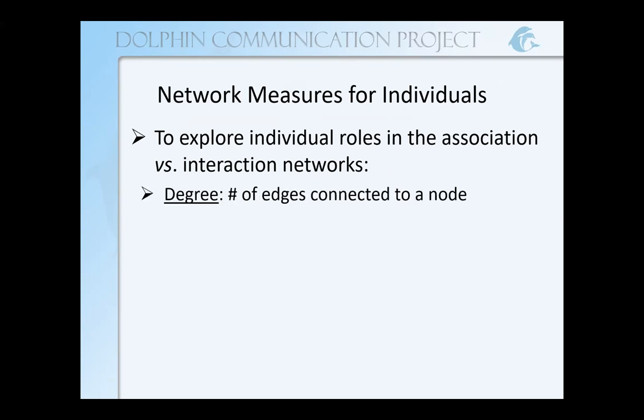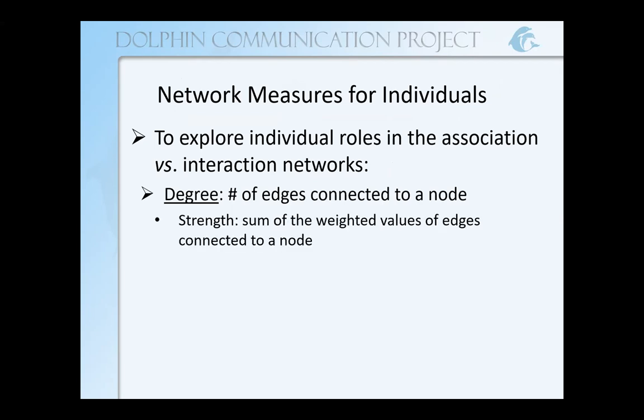The first of these is called degree, which is simply the number of edges that are connected to a node. Degree is a little less meaningful than a related measure called strength, which is the sum of the weighted values of the edges. In our association network, the strength would be the actual coefficients of association added together, which would give us a better idea of how strong our associations are versus just the number of associates that an individual dolphin has.